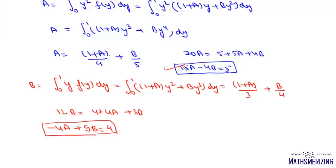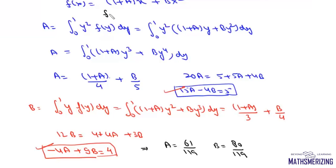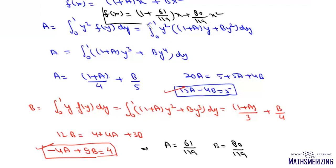Now we have two linear equations in a and b. Solving these two equations simultaneously, we get a = 61/119 and b = 80/119. With these values, we can write f(x) = 1 + (61/119)x + (80/119)x². That is the answer to this question.